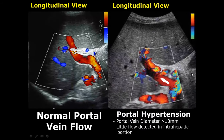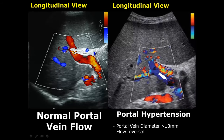Portal hypertension can occur due to cirrhosis. The diameter of the portal vein will be more than 13 millimeters and it will have reduced flow. In the intrahepatic portion of the portal vein, it can also have flow reversal on Doppler. Here you can see the blue color, which suggests the flow is moving away from the liver — this is a flow reversal.